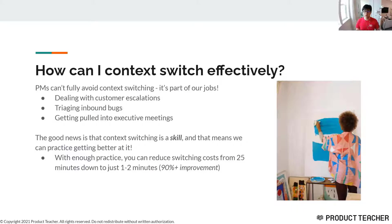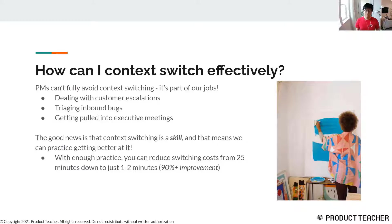The great thing is that context switching is itself a skill. It's not something where we are permanently relegated to having to pay that cost of having to switch. We can actually practice in a way where instead of it taking 25 minutes for us to ramp back into some other task, we can actually only need about one to two minutes to successfully switch contexts.